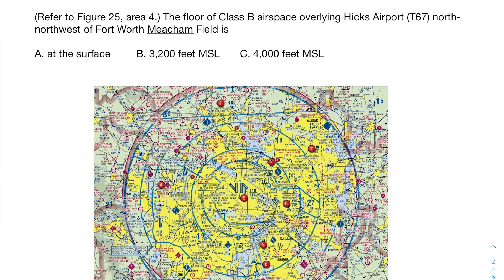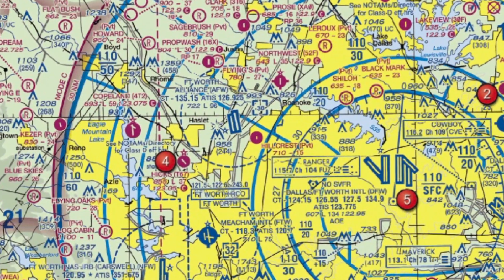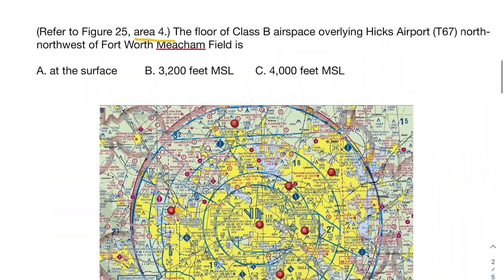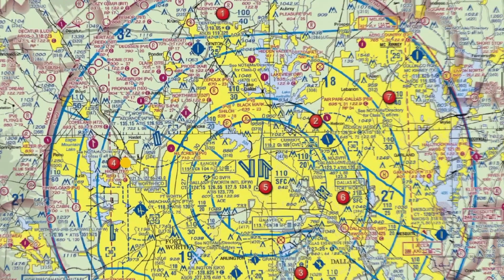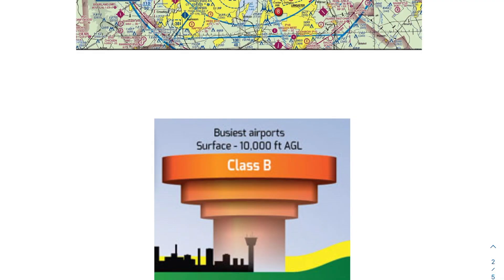The next problem says: the floor of Class B airspace overlying Hakes Airport north-northwest of this field is what? This figure is massive, so we want to look at area four and zoom in. Hakes Airport looks like it's here. Class B stands for big blue airspaces, reserved for very popular airports like JFK — in this example, Dallas-Fort Worth International Airport. Class B airspaces look like an upside-down wedding cake with concentric circles where, depending on where you are, you have different floors.